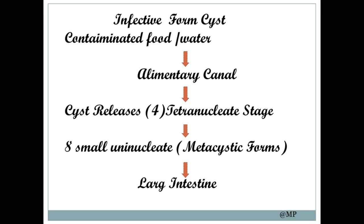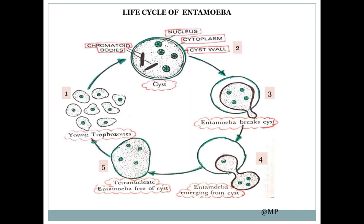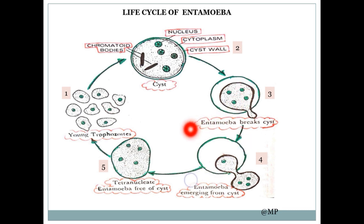The infective form is the cyst, which is ingested by the human being through contaminated food and water. It then enters into the alimentary canal. Here, the cyst releases the four tetranucleate forms, and then eight small uninucleate or metacystic forms are released into the large intestine. In the diagram, you can see the young trophozoite forming the cyst, which is ingested by human beings. Entamoeba breaks its wall in the intestine and the tetranucleate entamoeba is freed from the cyst, and they change back into young trophozoites.